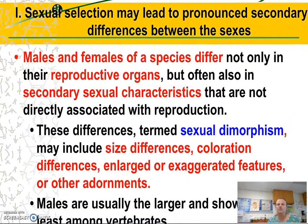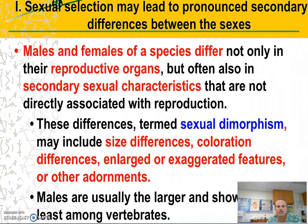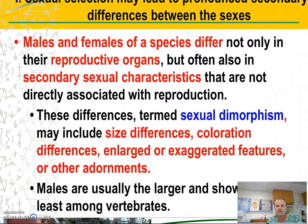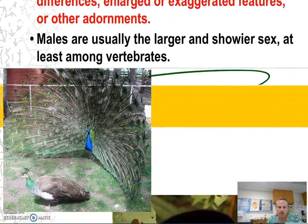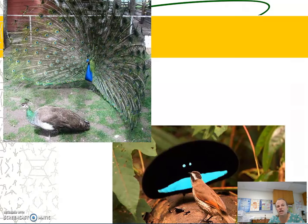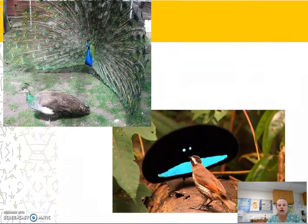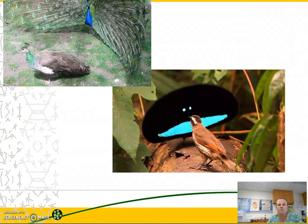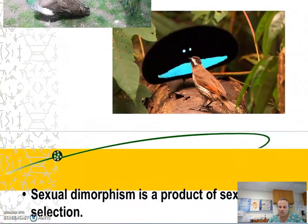Sexual selection may lead to pronounced secondary differences between the sexes. Males and females differ not only in reproductive organs but also in secondary sex characteristics such as differences in size, color, and enlarged or exaggerated features — and usually males have the showier features. For example, the peacock's feathers are colorful and the male uses them to entice the female. Similarly, the male bird of paradise puts on a dance and displays his colors to attract a female.